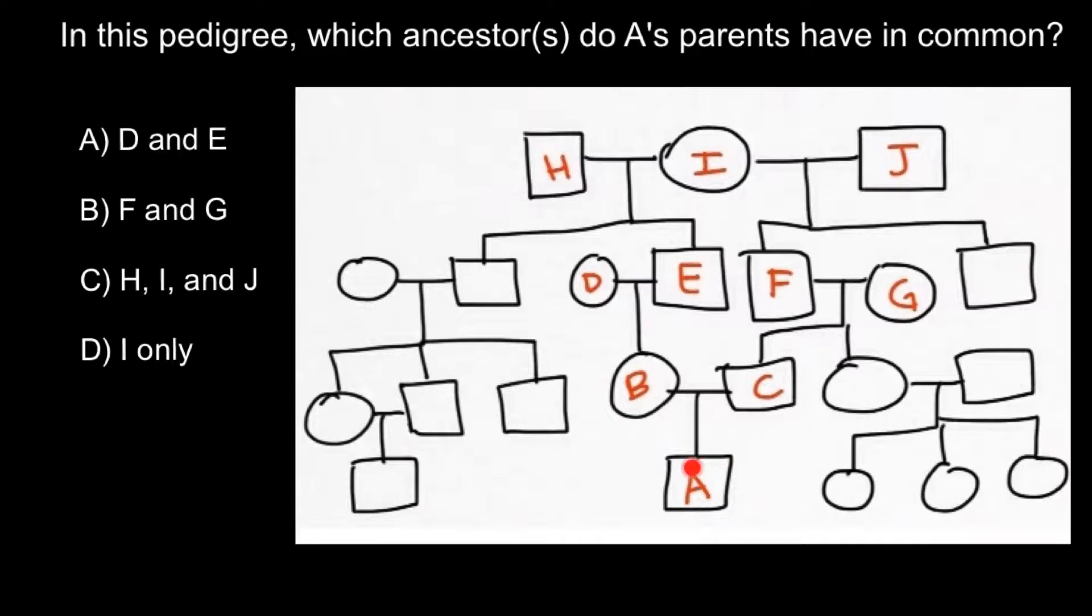Here is our proband A. A has parents B and C, mother and father. We see here three ancestors. This female has two connections to two males.